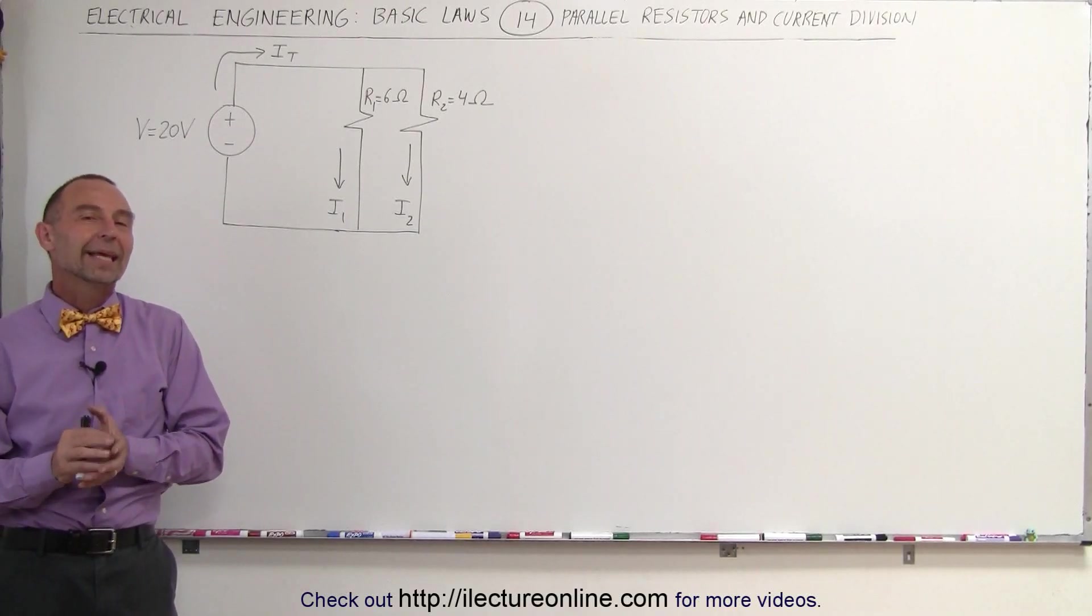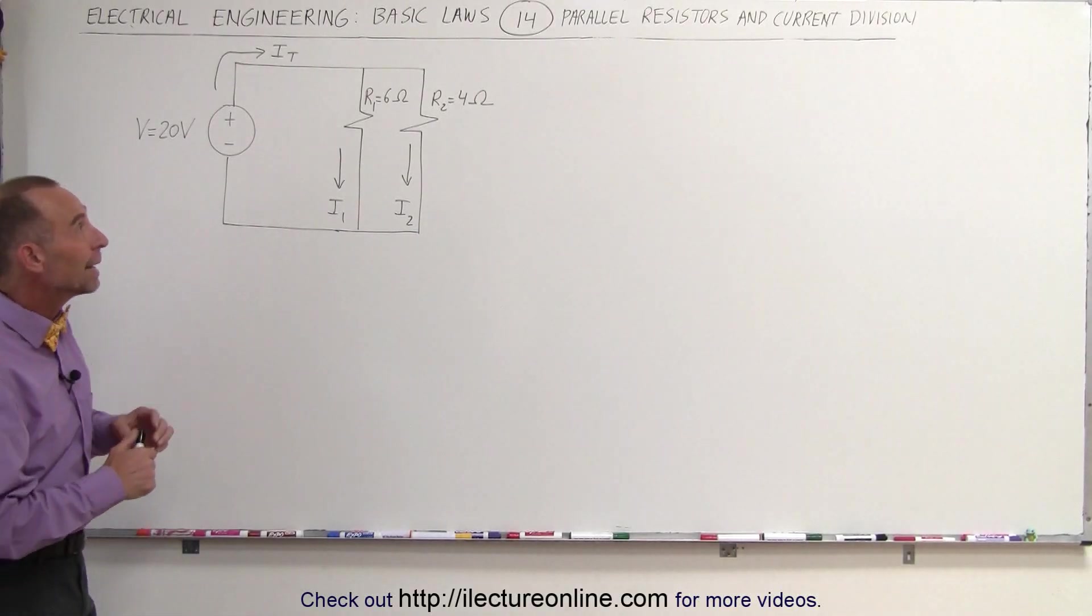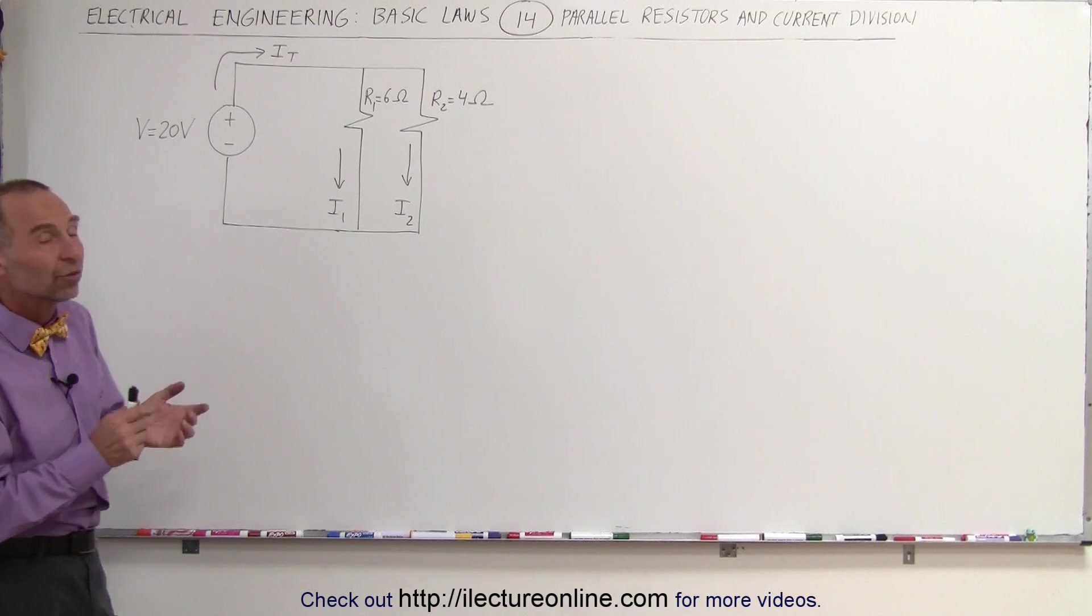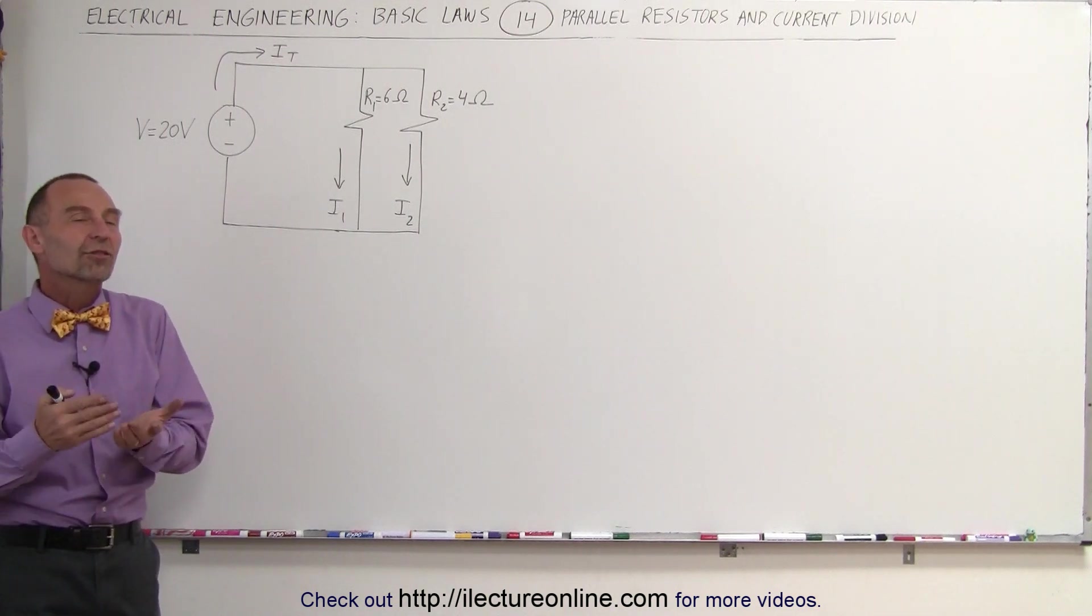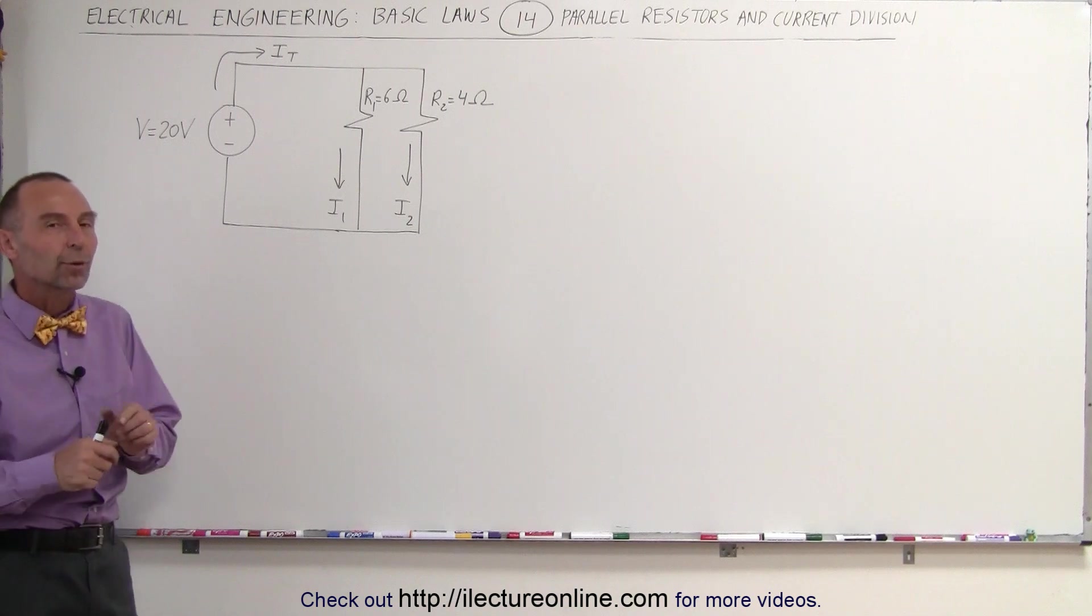Welcome to Electron Online. In this example, we're going to take a look at a parallel circuit, two resistors in parallel, which essentially form a current divider. How does that work?